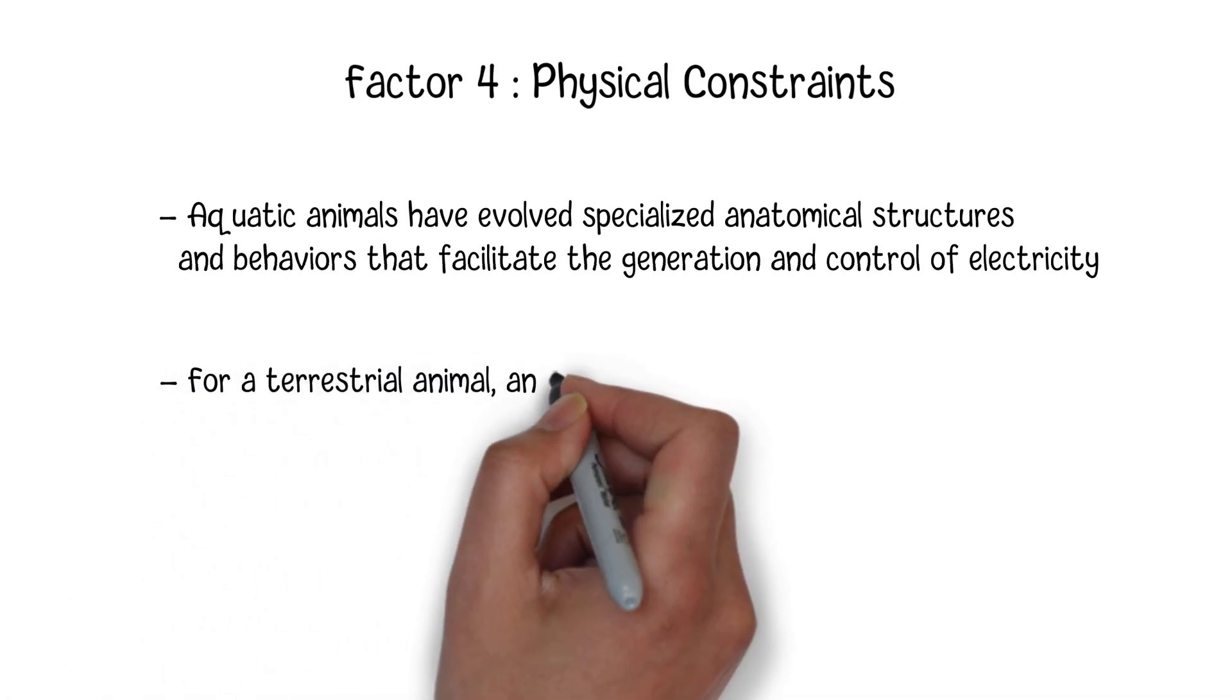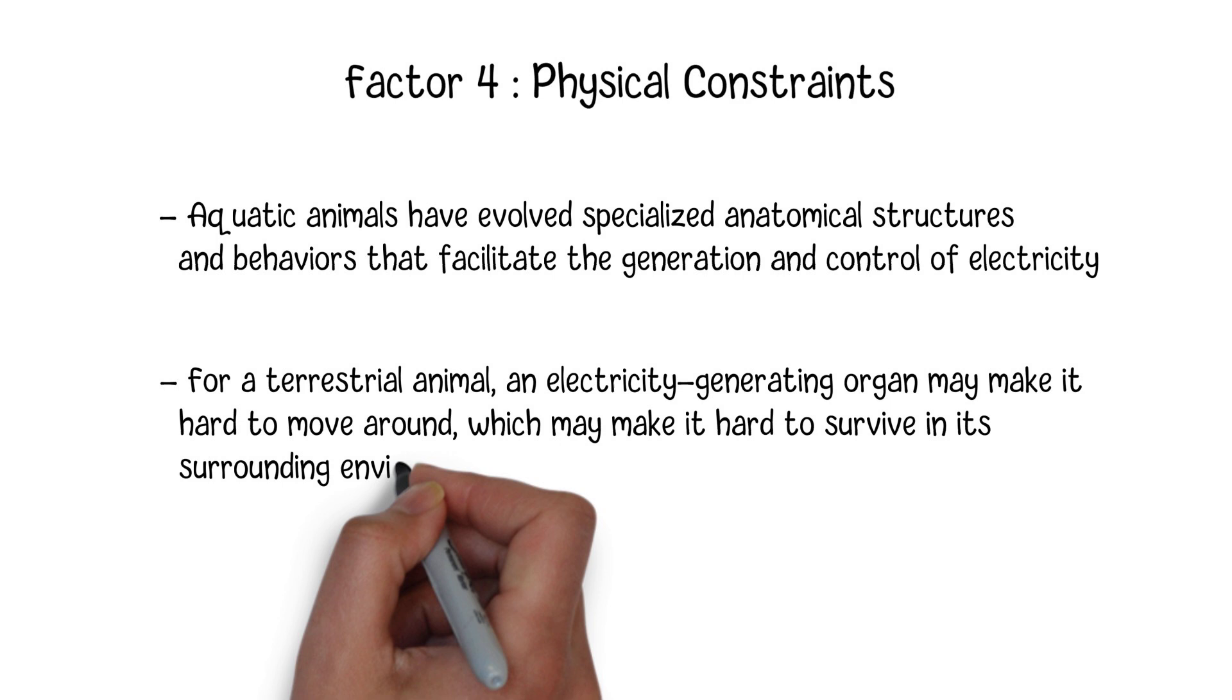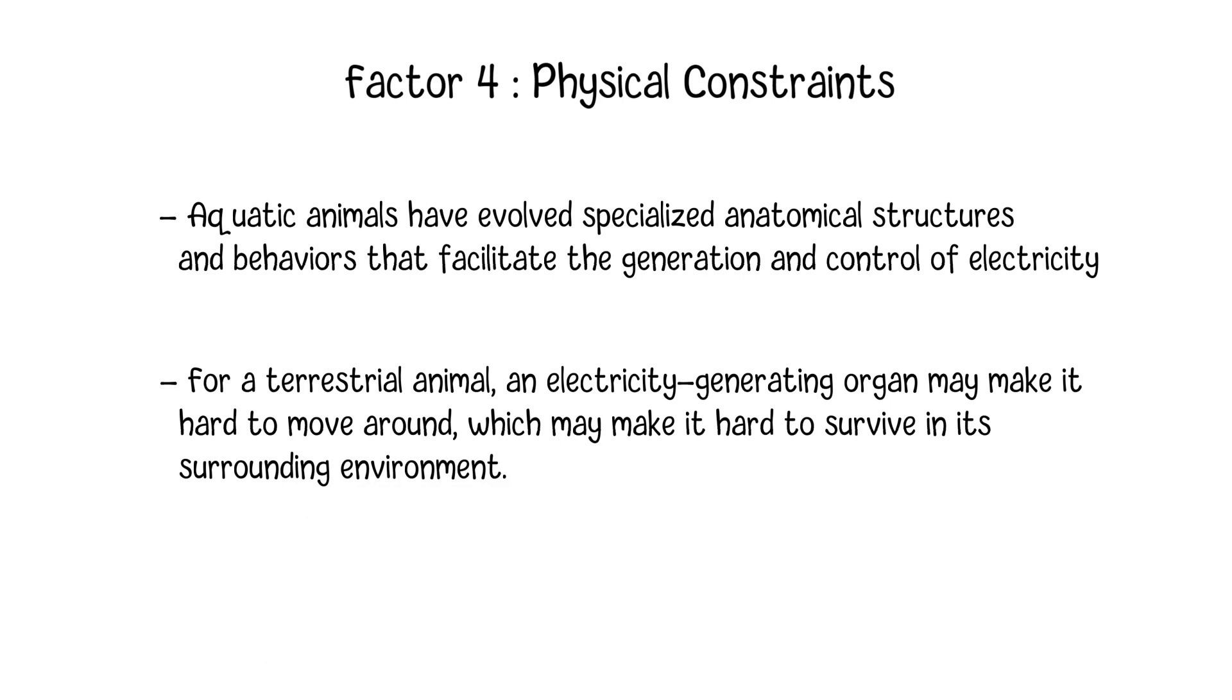So for a terrestrial animal, an electricity-generating organ may make it hard to move around, which may make it hard to survive in its surrounding environment.